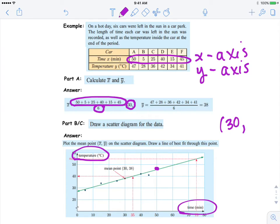Then you're going to do the same thing for your y values: add them up and then divide by six. And you get the mean for y is 38.